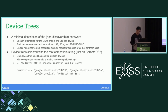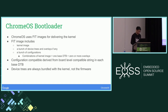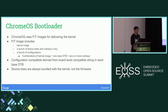There's an example showing the MT8186 Corsola SoC family, which has a device called Magneton with two different SKUs. The Chrome OS bootloader uses FIT images to deliver the kernel. The FIT image includes one kernel binary, a whole bunch of device trees, and maybe some overlays. One configuration maps to one kernel image plus one base device tree and zero or more overlays, and each configuration has a compatible string tied to it, derived from the board-level compatible string.